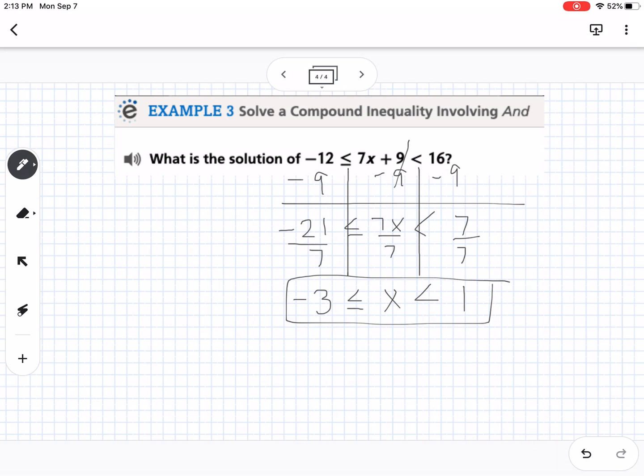And then if I go to graph this, I have on negative 3, I would put a closed dot on that because it's or equal to. On 1, I'd put an open dot, and we know that x is between those two numbers, it's an and, so I'd shade in the middle.